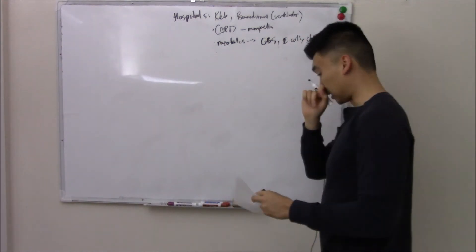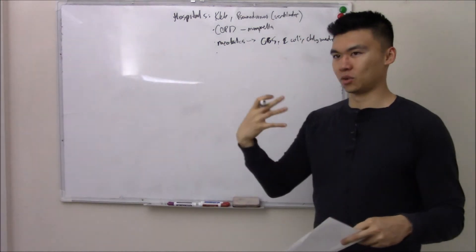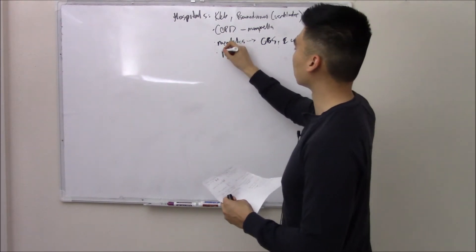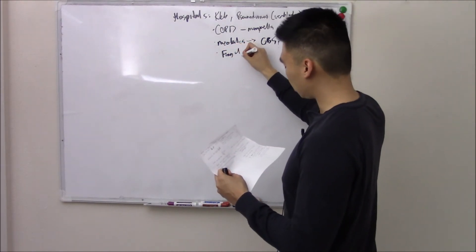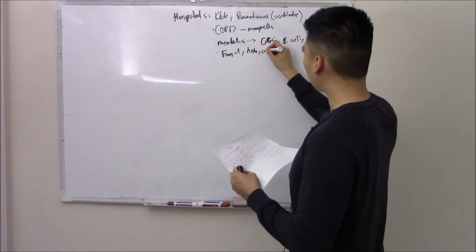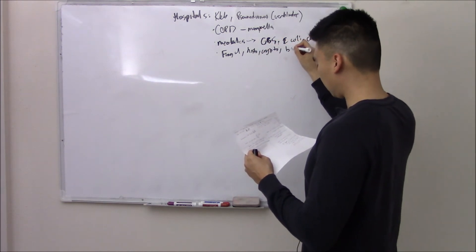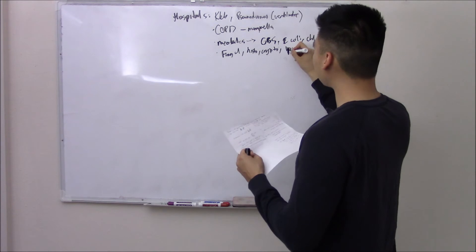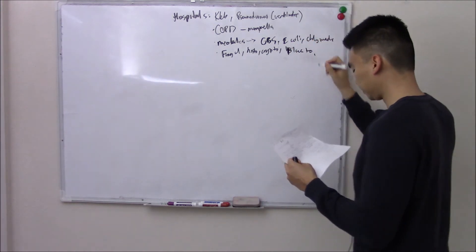If you see really sick patients, immunocompromised, or someone that's been in certain circumstances like going cave diving, then you might see fungal infections. Those are your histo, your crypto, your coccidio, your blasto.